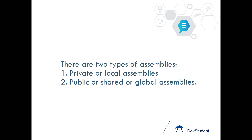There are two types of assemblies: one is private and one is public. Private assemblies are also known as local assemblies. Public assemblies are also known as shared or global assemblies.